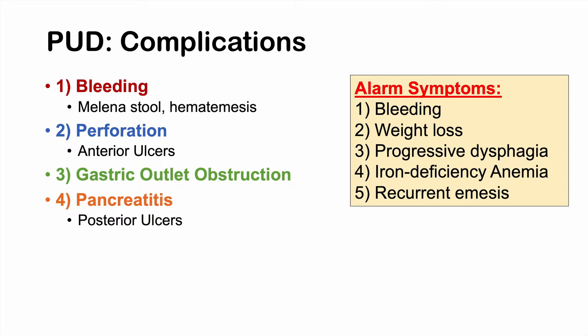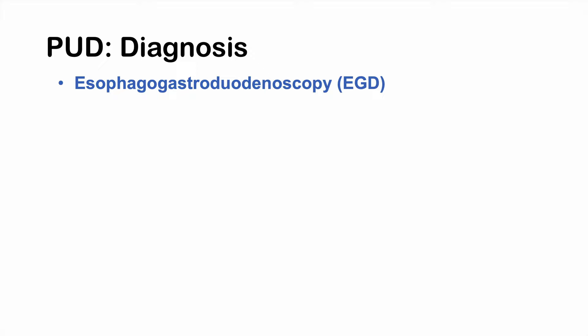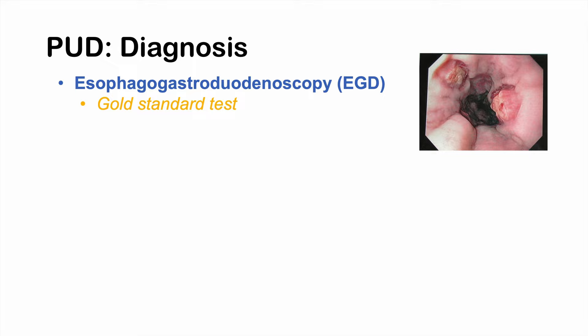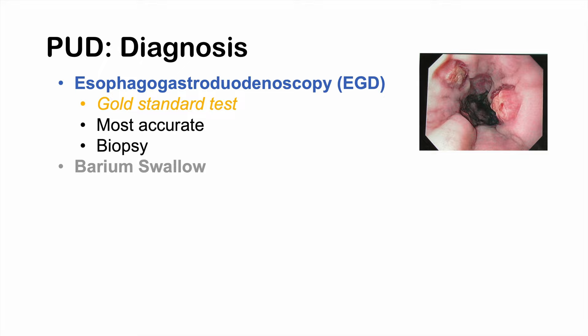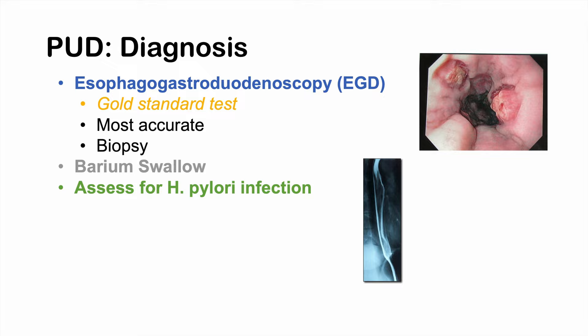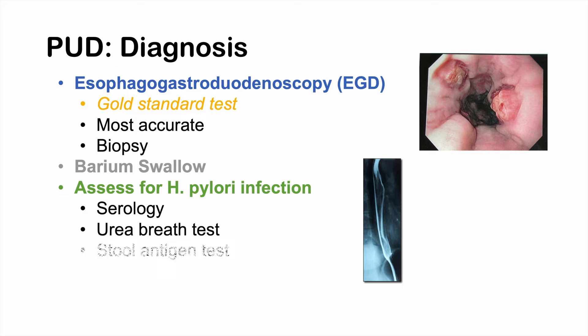The gold standard for diagnosing peptic ulcer disease is EGD, or esophagogastroduodenoscopy, where a scope is used to directly visualize ulcers in the esophagus, stomach, or duodenum, and biopsy can also be taken. Barium swallow can be used when EGD is not indicated or is contraindicated. It's also important to assess for H. pylori infection via serology testing, the urea breath test, or the stool antigen test.